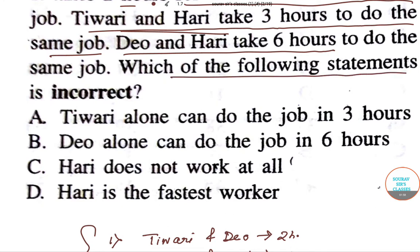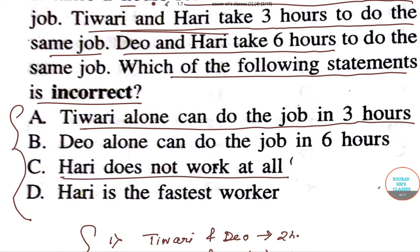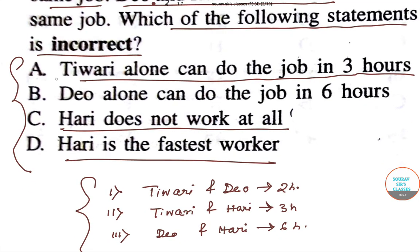Now we have to find which of the following statements is incorrect. The four options are: A) Tiwari alone can do the job in six hours, B) Dio alone can do the job in six hours, C) Hari does not work at all, D) Hari is the fastest worker.